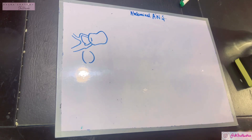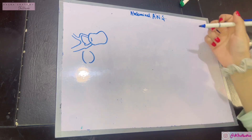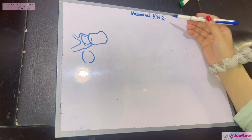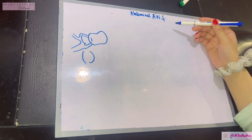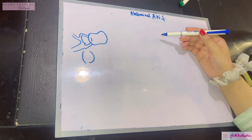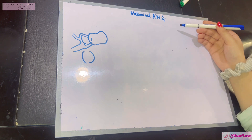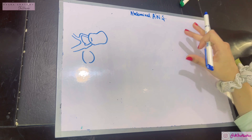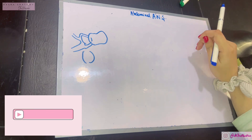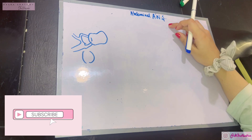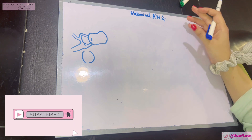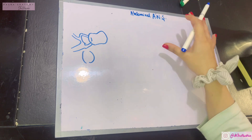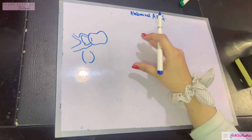Assalamu alaikum, this is Dr. Hasna with Hasna's Anatomy. Today we're discussing a very complex topic: the autonomic nervous system of the abdomen. I'll give special attention to the lumbar sympathetic chain and the celiac ganglion and celiac plexuses. Before I get started, if you haven't subscribed to my channel yet, I make anatomy a piece of cake, so quickly go ahead and press that subscribe button.